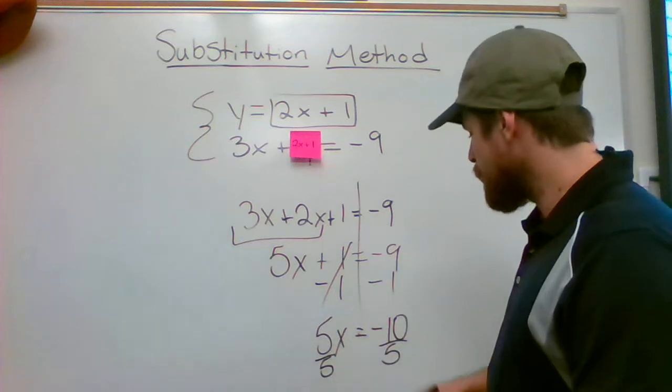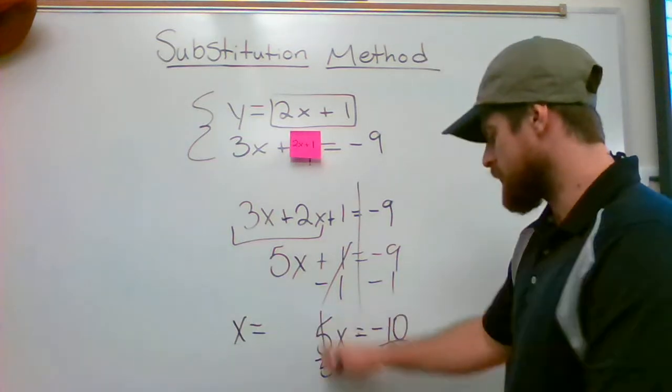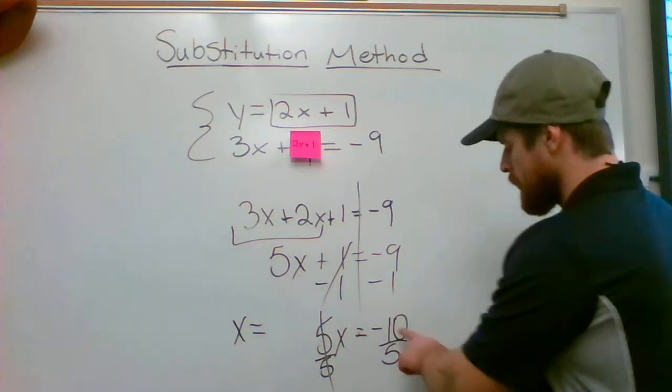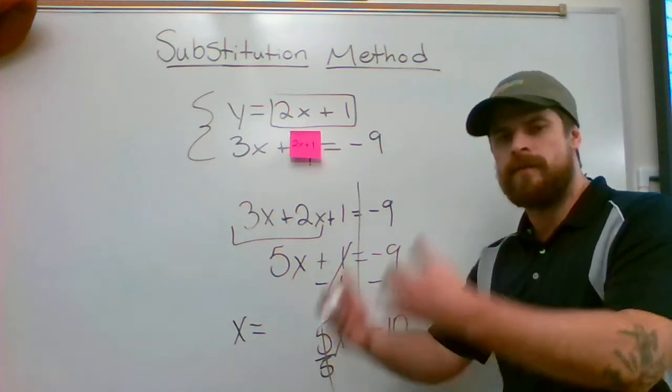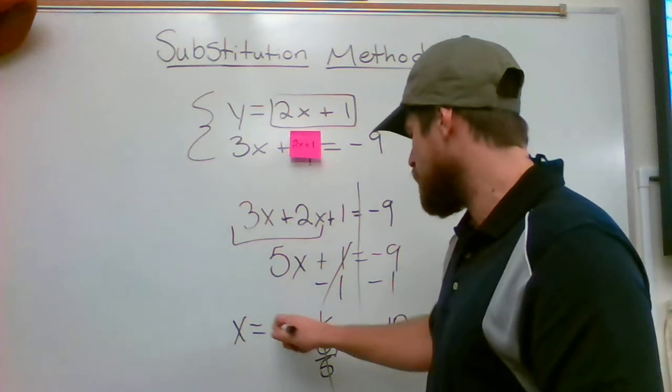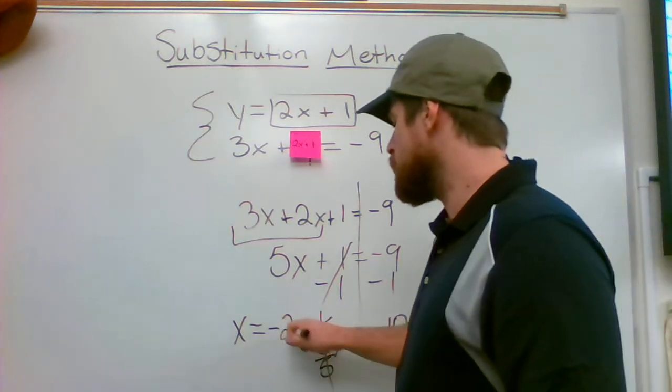So I divide by 5 and what I'm left with is x equals, because this will cancel, negative 10 over 5. Take a second, think it out. A negative divided by a positive is going to be a negative, and 10 divided by 5 is 2.